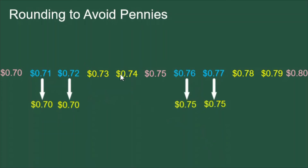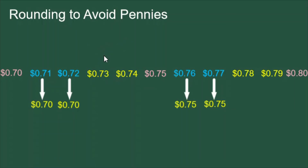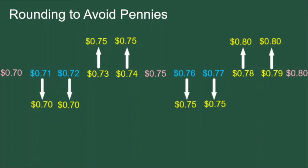For the remaining values shown here in yellow: 73 cents and 74 cents are rounded up to 75 cents; 78 cents and 79 cents are rounded up to 80 cents.